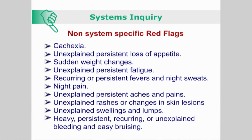unexplained persistent loss of appetite, sudden weight changes — for instance, weight loss of more than 2 kg per week — unexplained persistent fatigue, recurrent or persistent fevers and night sweats, night pain, unexplained persistent aches and pains, unexplained rashes or changes in skin lesions, unexplained swelling or lumps, and heavy, persistent, recurring or unexplained bleeding from an orifice, or easy bruising.